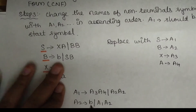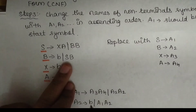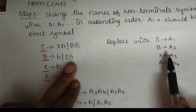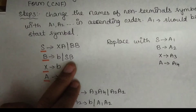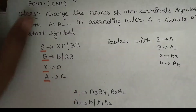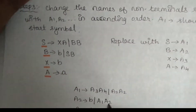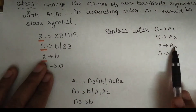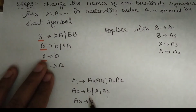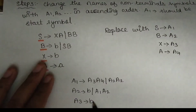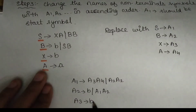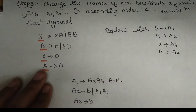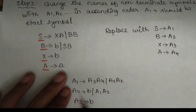That means: S is A1, B is A2, X is A3, and the remaining non-terminals become A4. A3 and A4 are terminals in the renaming scheme.